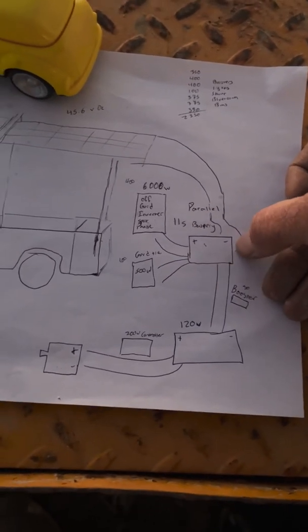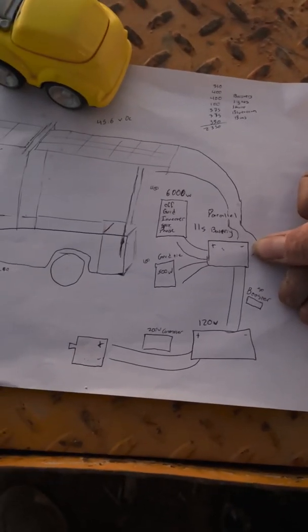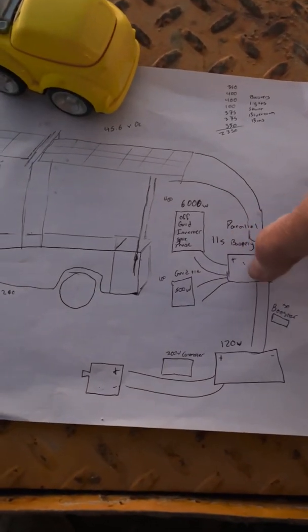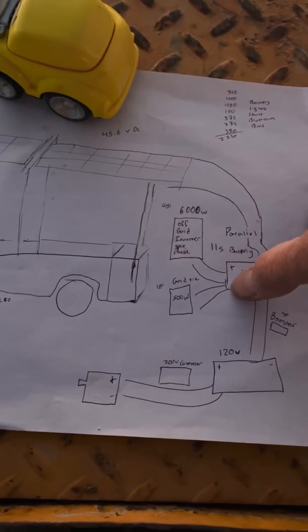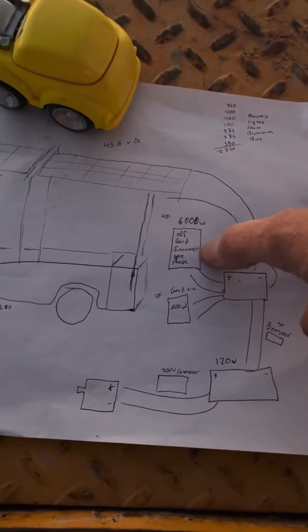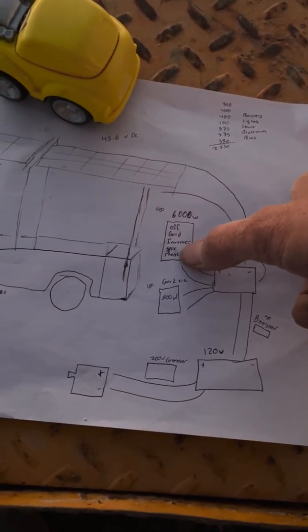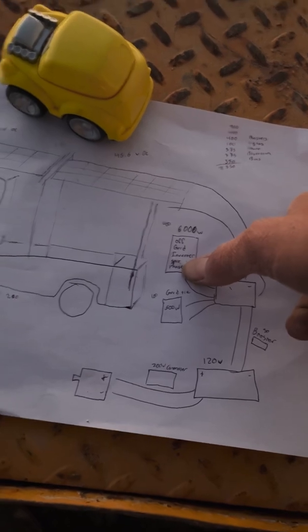How big this battery is going to be is kind of undetermined based on whatever I get from battery hookup. We're working out a couple different options. But we're going to run a 6,000 watt or something similar off-grid inverter that's going to be a split phase so that you can run like a well.